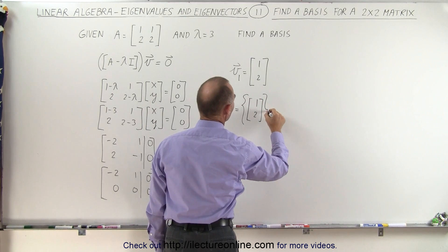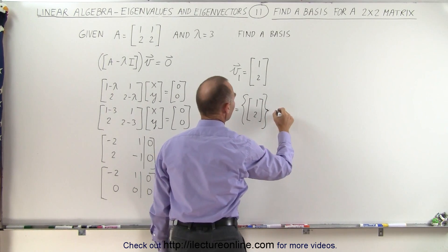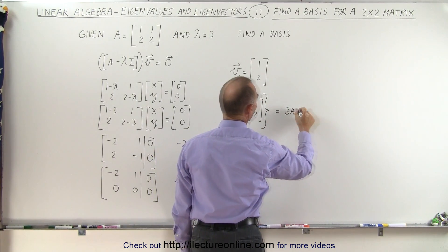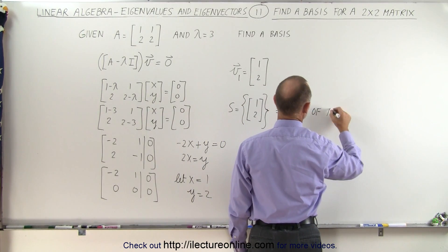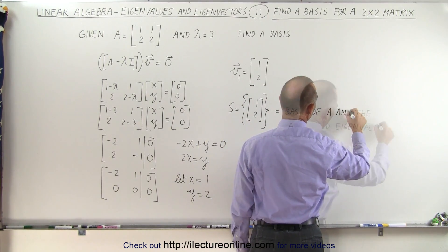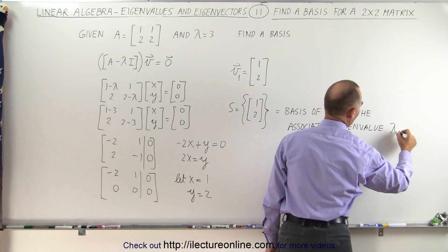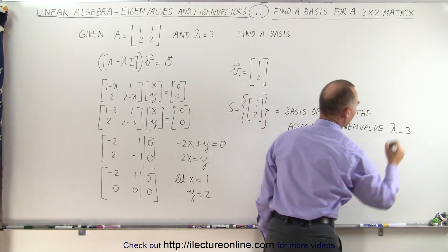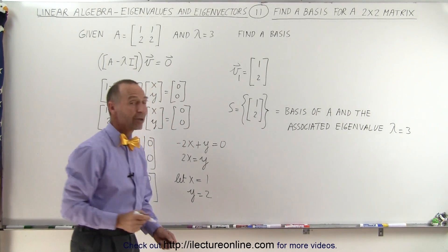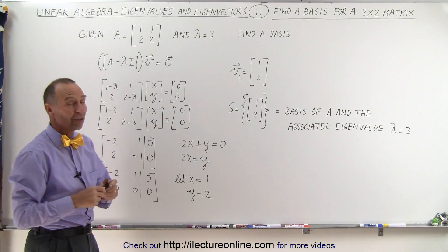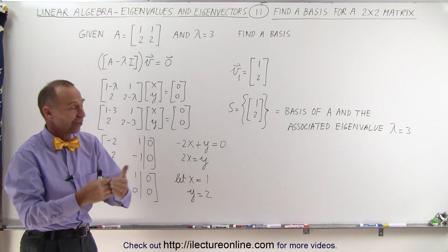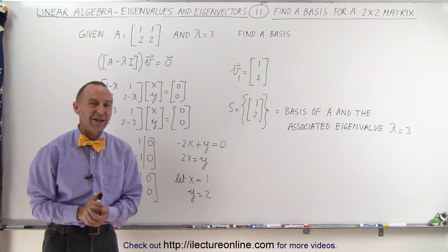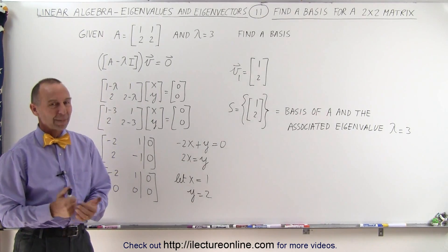this set then defines the basis. So this is equal to the basis of the matrix A and the associated eigenvalue. In this case, the eigenvalue is equal to 3. And so that's how you find the eigenvector, which then forms the basis of the matrix A and the associated eigenvalue lambda equals 3. And that's how it's done.